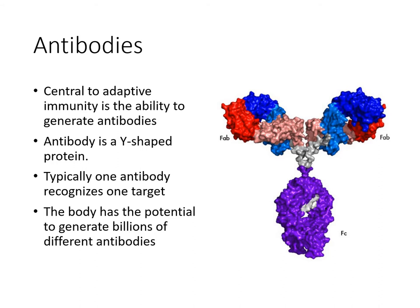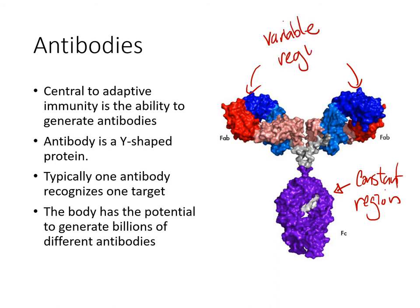Here is what an antibody looks like — it's a Y-shaped protein. There is a handle region that is the same for all antibodies, called the constant region. Then there are two arms that are different for each antibody — these are called the variable regions. To create those variations, you basically shuffle your genes; you have a set of genes dedicated for antibody production, like dealing out cards from a deck.